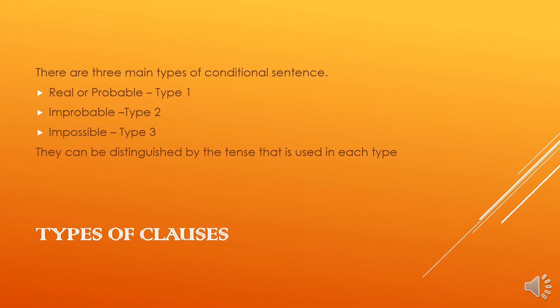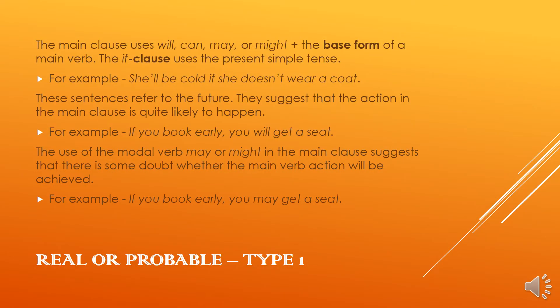There are three main types of conditional sentences or clauses: the real or the probable (type one), the improbable (type two), and the impossible (type three). They can be distinguished by the tense used in each type. The main clause uses 'will', 'can', 'may', or 'might' with the base form of the main verb, and the if clause uses the present simple tense.